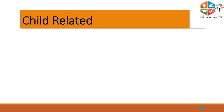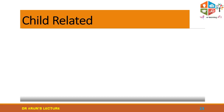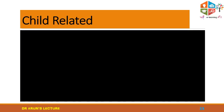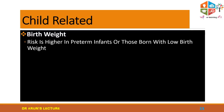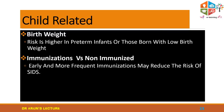Child-related factors: preterm infants are more likely to develop SIDS. Low birth weight in a newborn also increases the likelihood. Regarding immunization, non-immunized or less frequently immunized newborns are more likely to develop SIDS, while early and more frequent immunization may reduce the risk. Regarding multiple birth babies, the incidence is three times higher in twins and even higher in triplets, likely because multiple birth babies are generally premature and often have low birth weight.